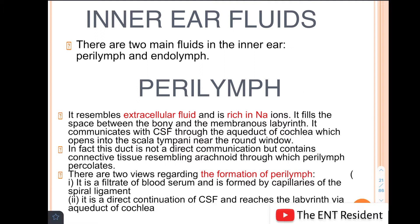The perilymph resembles extracellular fluid and it is specifically rich in sodium ions. This perilymph is located in the space between the bony and the membranous labyrinth. It communicates with the CSF through the aqueduct of cochlea, which opens into the scala tympani near the round window.